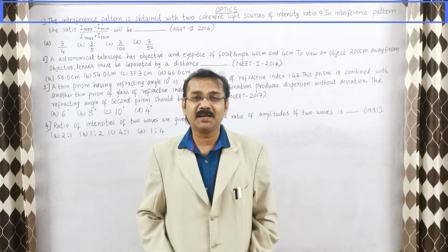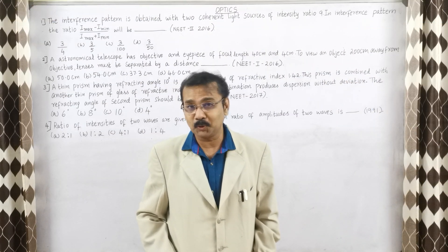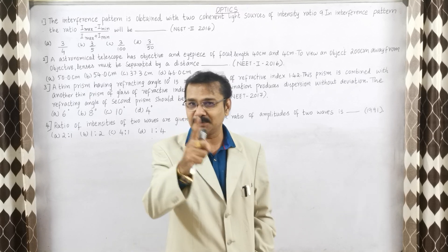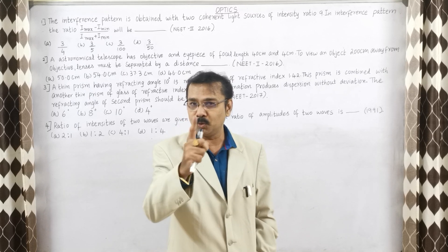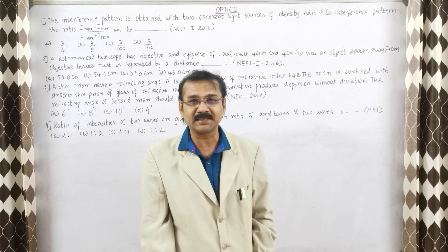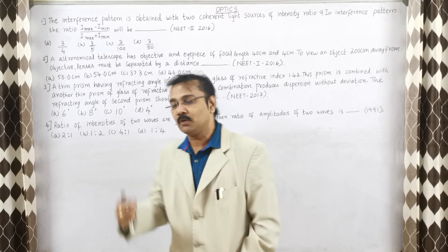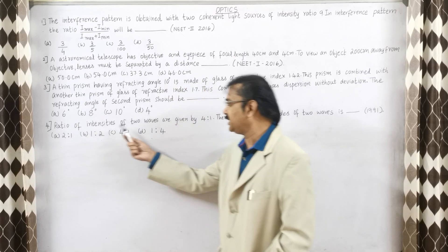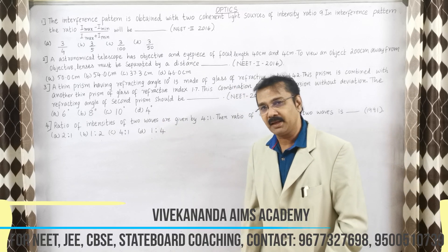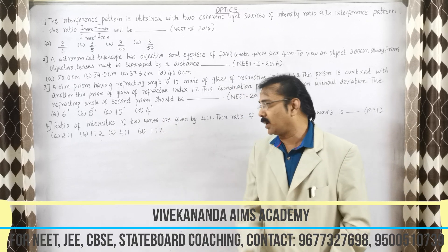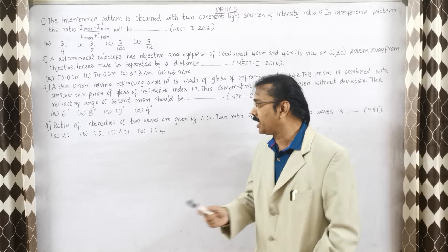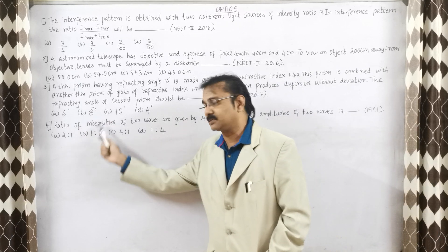I hope you enjoyed the last two questions — question number 6 and question number 5. Let us go on to question number 4 to get the answer in a single step. The ratio of intensities of two waves is given as 4:1. He has given the ratio of intensities.